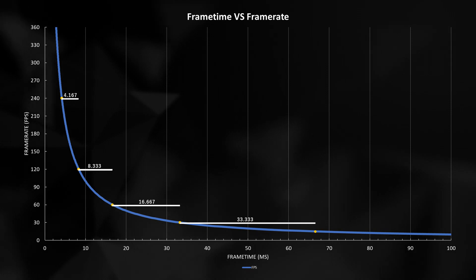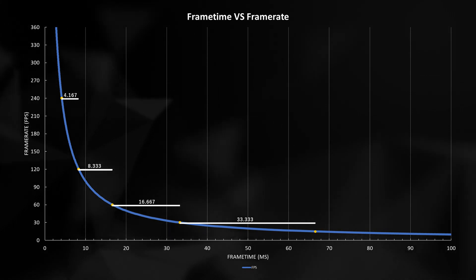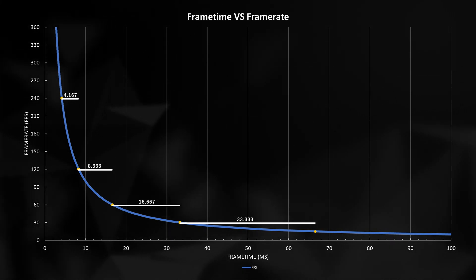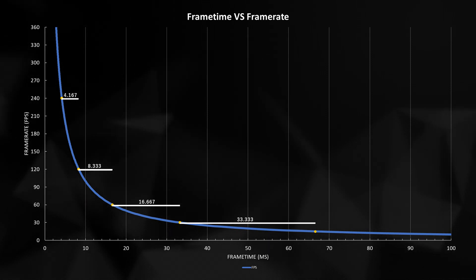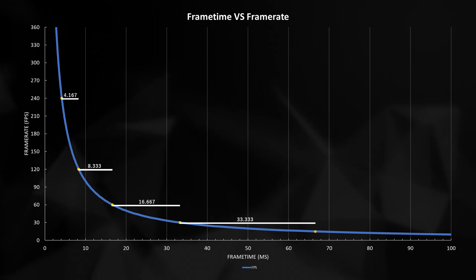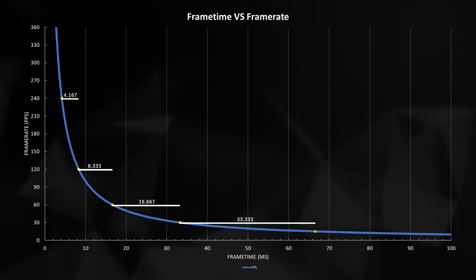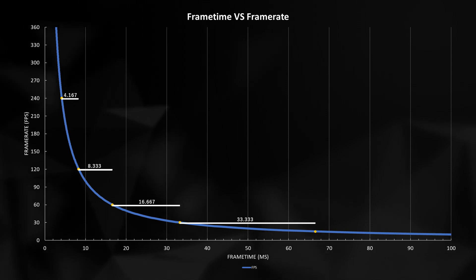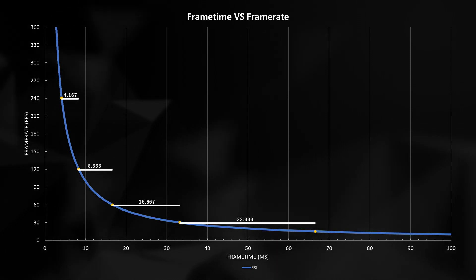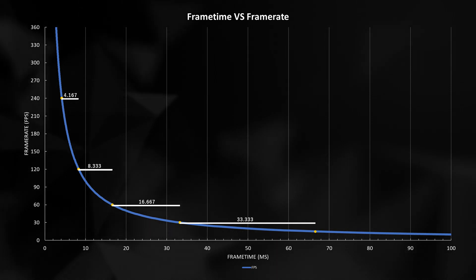Strangely enough, if we then take an additional 4.167 milliseconds to render another frame, we don't cut the performance in half — we only lose 33% of the frame rate. It takes even more time to see our frame rates get cut in half again. And as we continue to add time to our frame times, our frame rates don't end up taking as large of a hit in performance. This relationship of frame rate versus frame time makes sense on paper, but how does this work out in a practical sense?